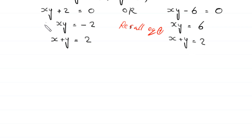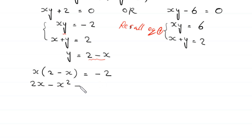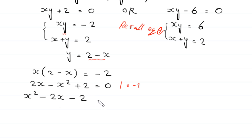For the first system (x plus y equals 2 and xy equals negative 2): from equation 1, y equals 2 minus x. Substituting, x times (2 minus x) equals negative 2, which gives 2x minus x squared equals negative 2. Multiplying by negative 1 gives x squared minus 2x plus 2 minus 4 equals 0, that is x squared minus 2x minus 2 equals 0. This quadratic is not factorable, so we use the quadratic formula.